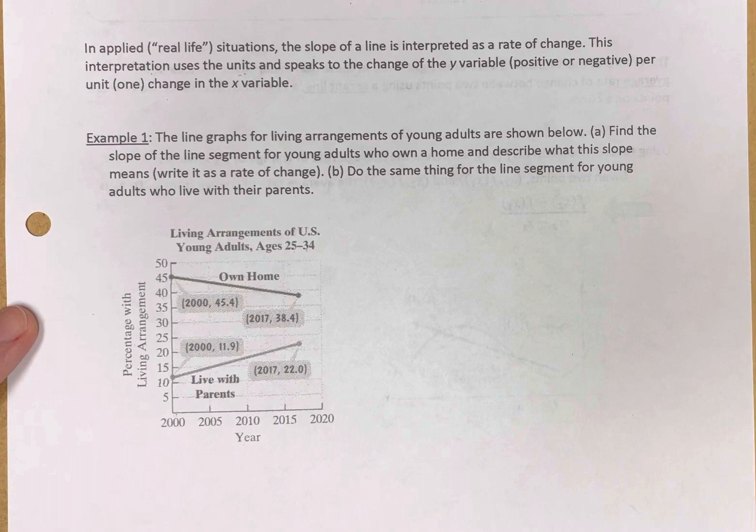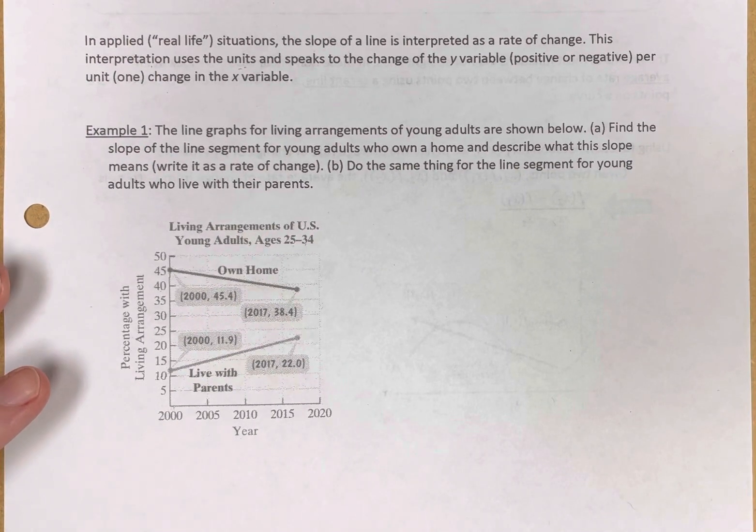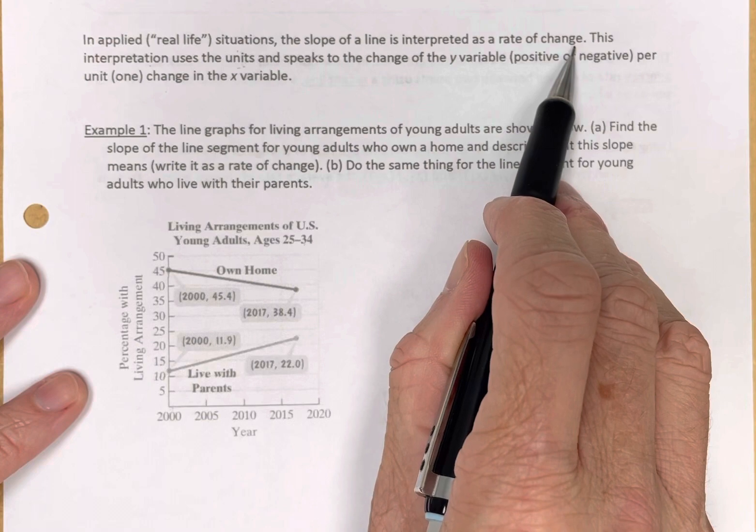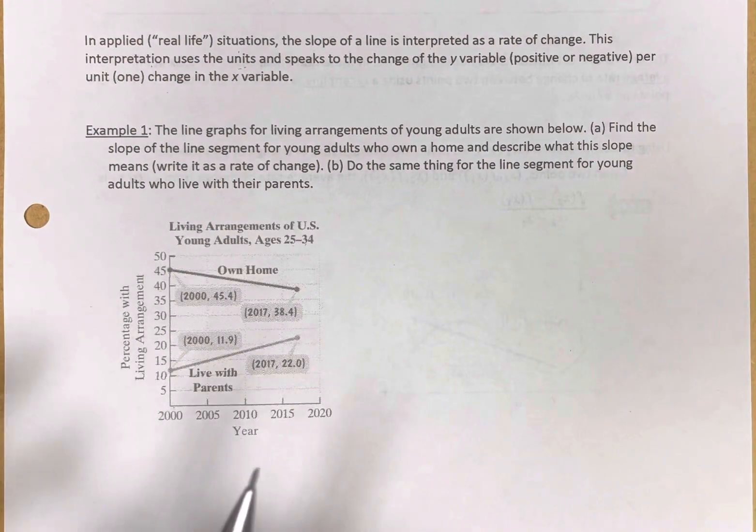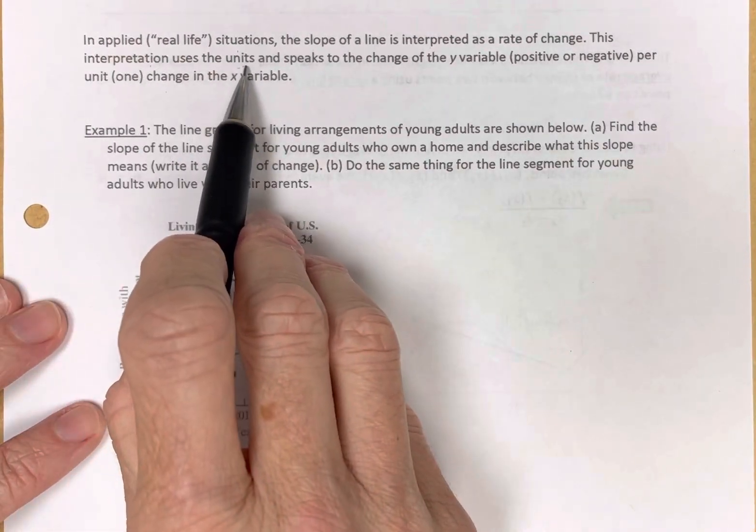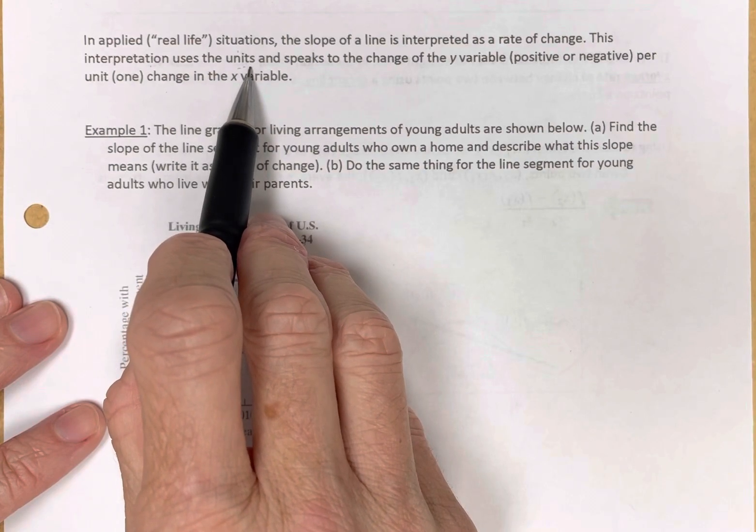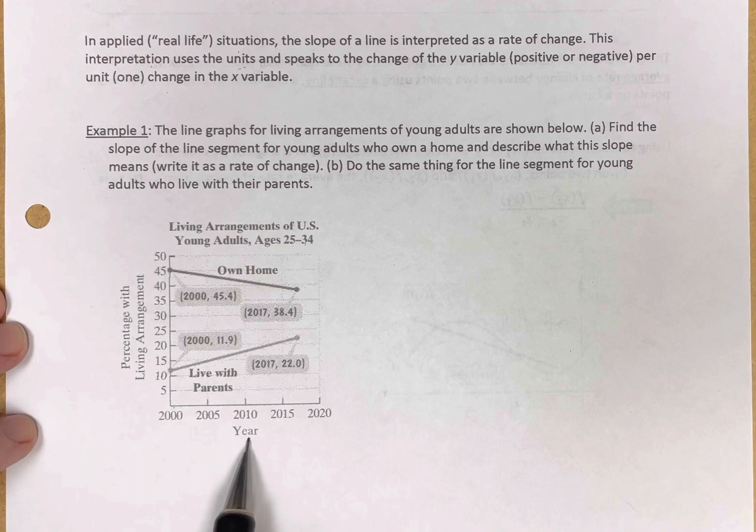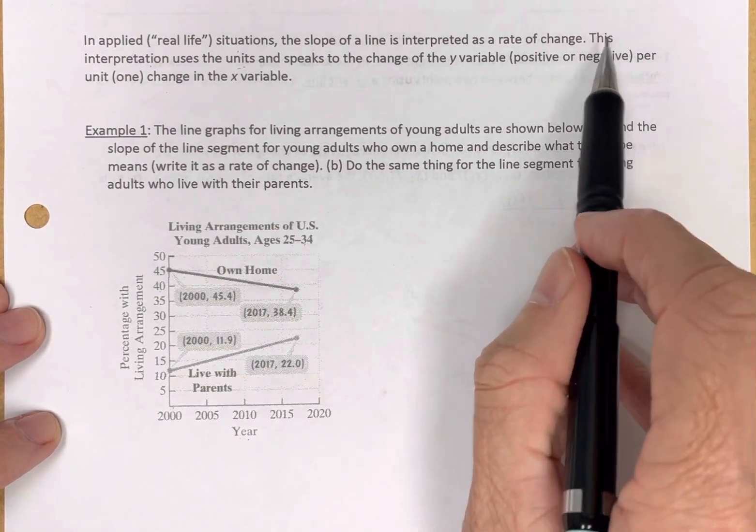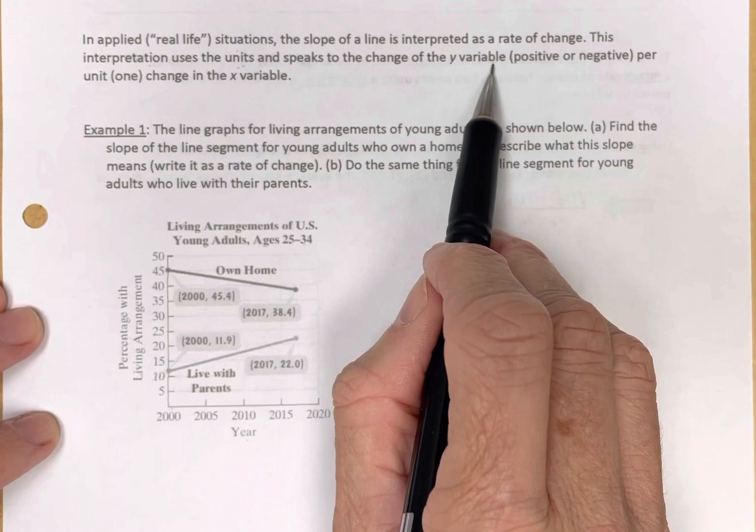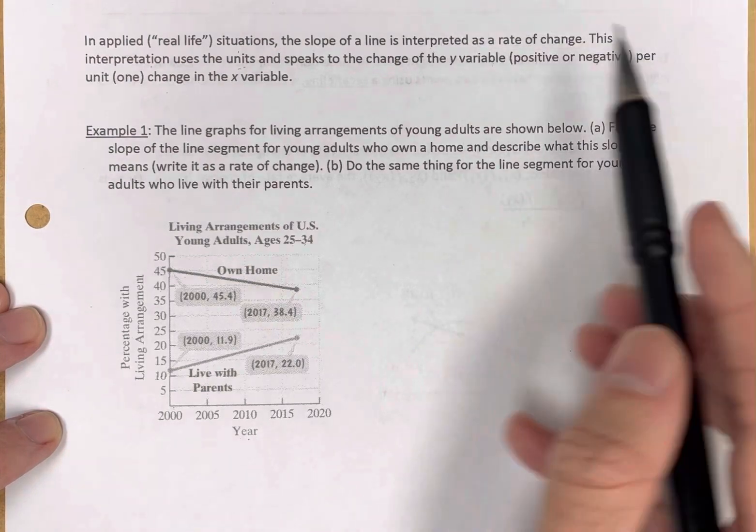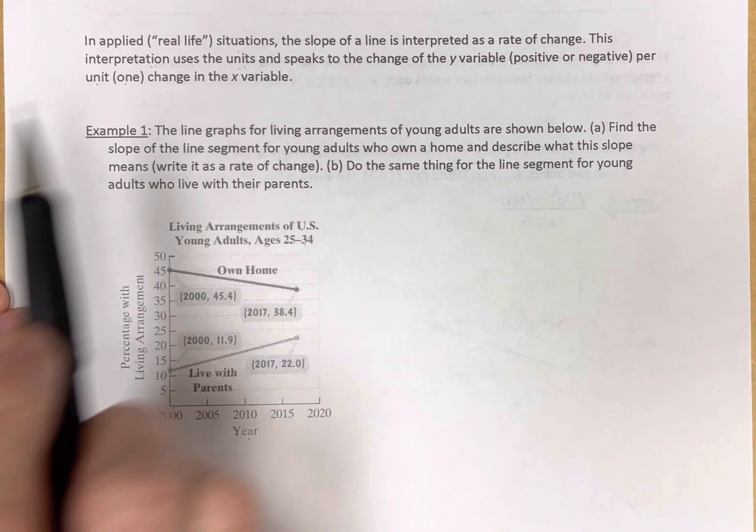So now let's talk about what we're going to be getting into with these applied or real-life situations. In these situations, the slope of a line is interpreted as a rate of change. So we're going to interpret what's happening here and speak to it to someone that makes sense to them. This interpretation uses the units that we're talking about in the real-life situation. In this case, years and percentage of young adults. Those are the units we're going to deal with. Uses units and speaks to the change of the y variable, positive or negative.